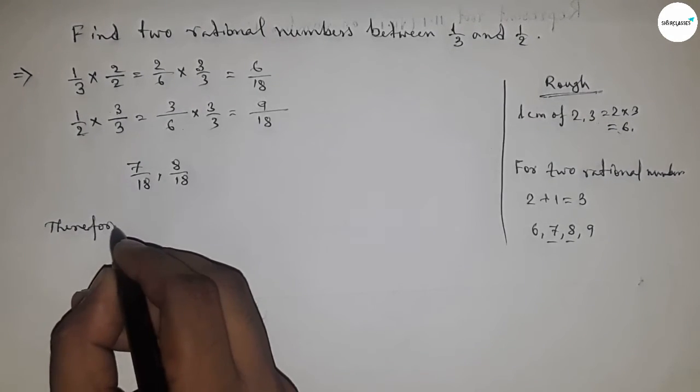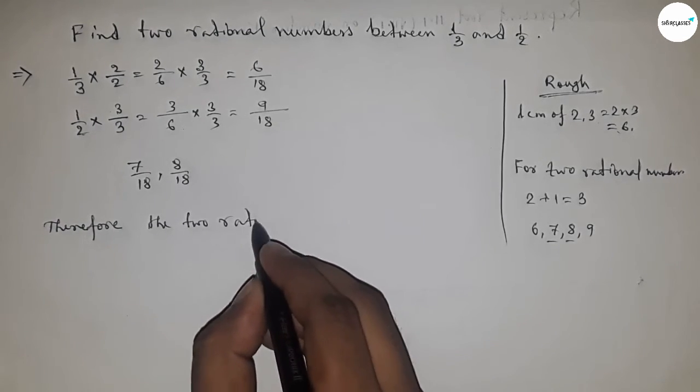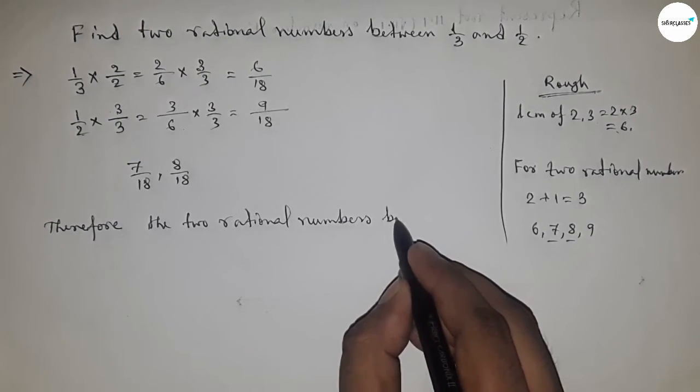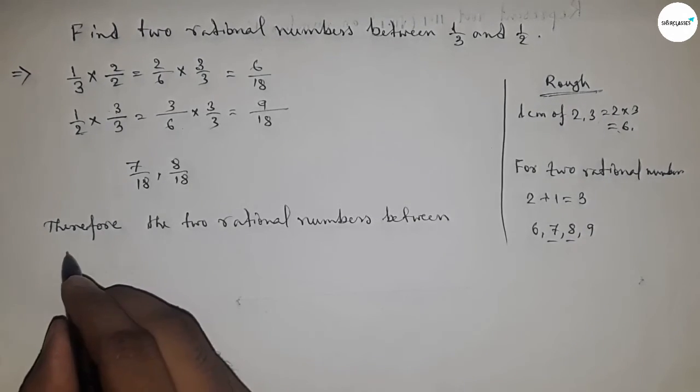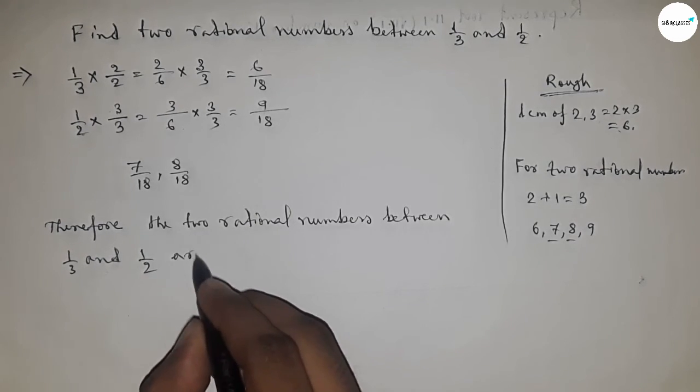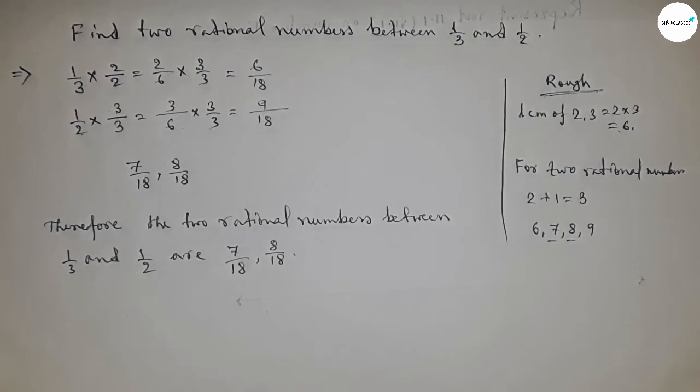1 upon 3 and 1 upon 2. So therefore, the two rational numbers between 1 upon 3 and 1 upon 2 are 7 by 18 and 8 by 18. So this is the process to find out the two rational